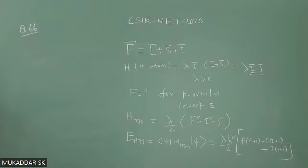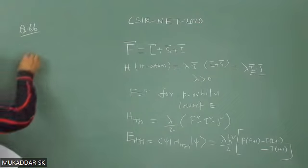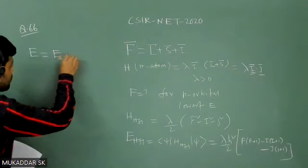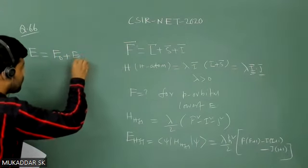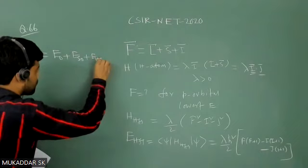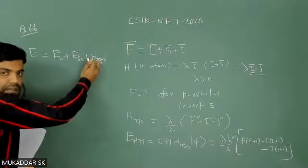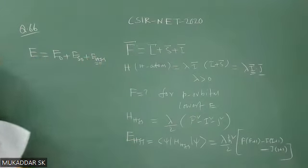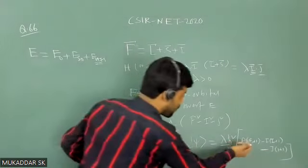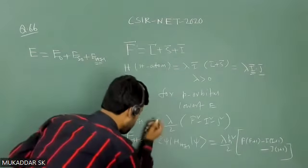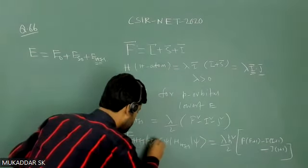The lowest energy will be possible when we note that the total energy of the electron contains the Bohr energy E₀, then the spin-orbit energy E_SO, and then E_HFS. So the lowest E_HFS will give the lowest energy of the orbital. You can see that E_HFS is a function of F, I, and J.